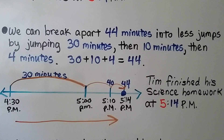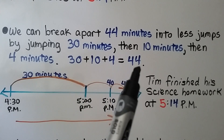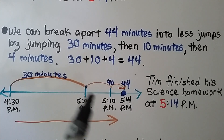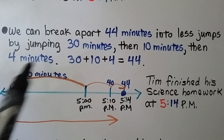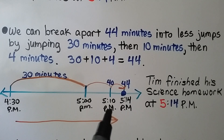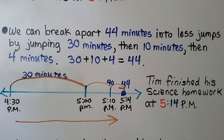We can break apart 44 minutes into fewer jumps by jumping 30 minutes, then 10 minutes, then 4 minutes — because 30 + 10 + 4 = 44. Going from 4:30 to 5:00 p.m. is a half hour, that's 30 minutes. Then we jump 10 minutes to 5:10 p.m. We're at 40 minutes total, and we just need four more minutes, bringing us to 5:14 p.m. Tim finished his science homework at 5:14 p.m.